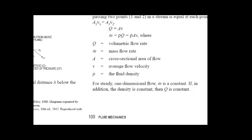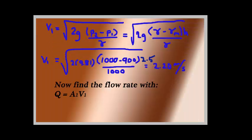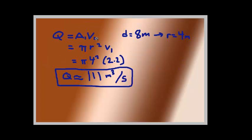Alright, so with that in mind, Q is equal to A1 times V1. The cross-sectional area is also a circle, so we turn that into πR². Our diameter was 8 meters and we turn it into a radius, R equals 4 meters from d equals 8 meters. So we plug that in: 4 square from R square, so π times 4² times 2.2 meters per second.